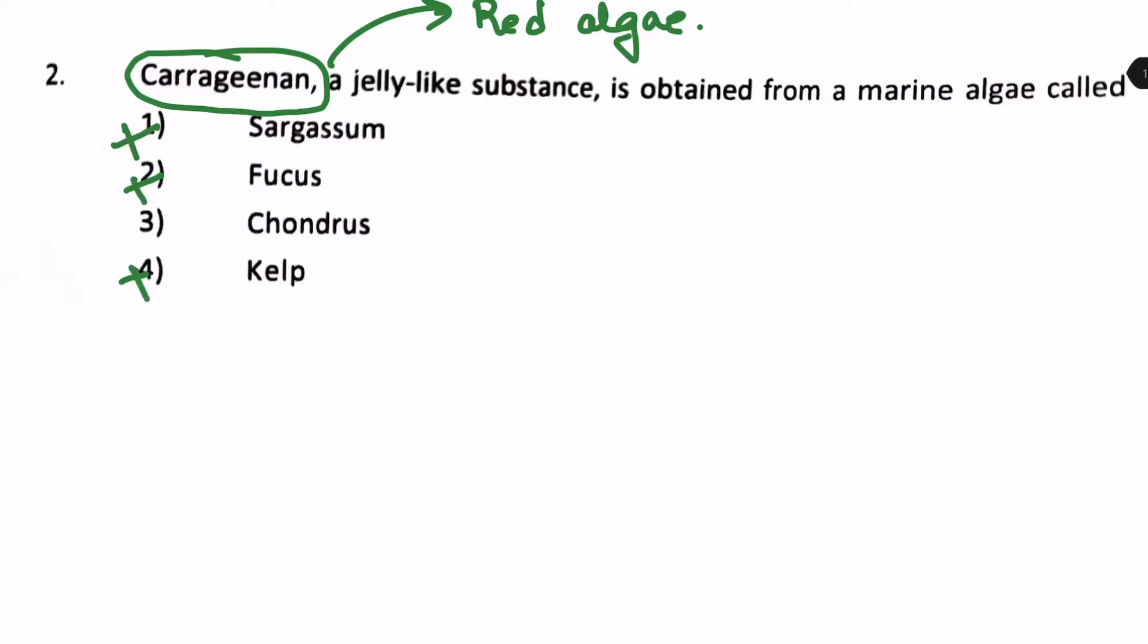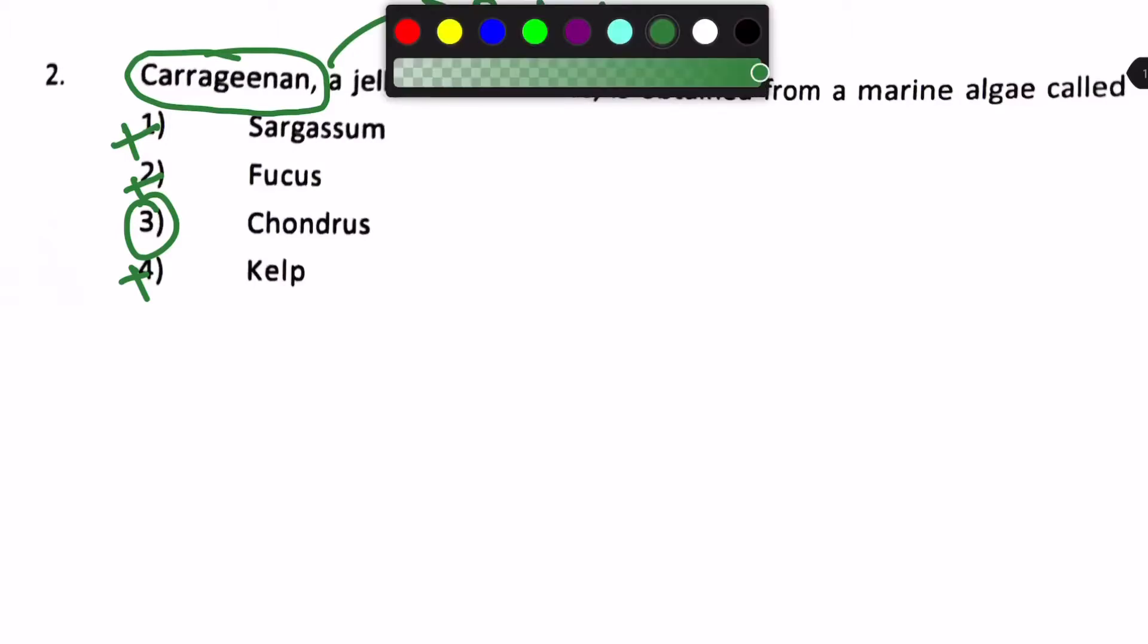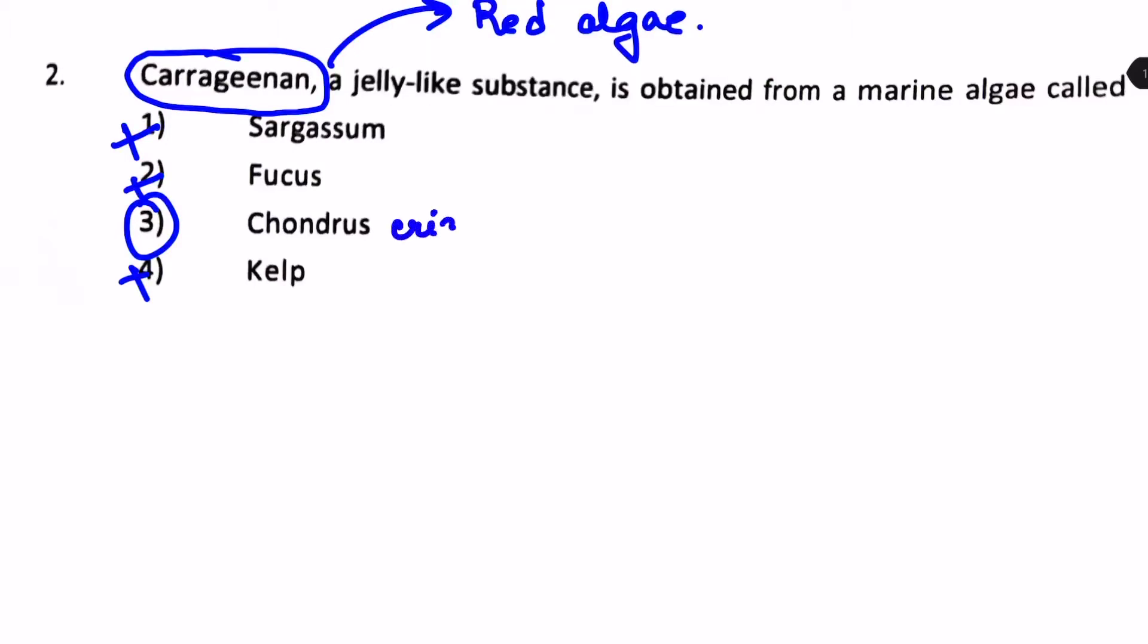And so, they won't be the correct options. The only one left is Chondrus. So, Chondrus crispus is the one which gives us the Carrageenan substance. Next.